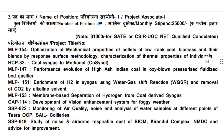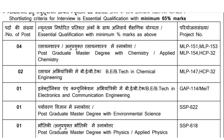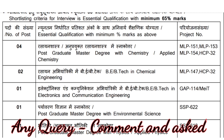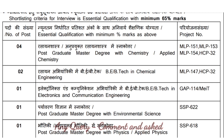Now scrolling down, you will see the project associate post. This is basically for those who have qualified the GATE exam and CSIR NET exam. Here there are nine vacancies. The first is PG master degree with chemistry — four vacancies. B.Tech in chemical engineering has two vacancies. B.Tech in electronics and communication engineering has one vacancy. PG master degree with environmental science has one vacancy. And PG master degree with physics and applied physics has one vacancy. Total nine vacancies.